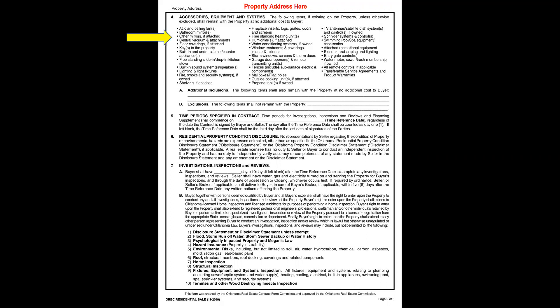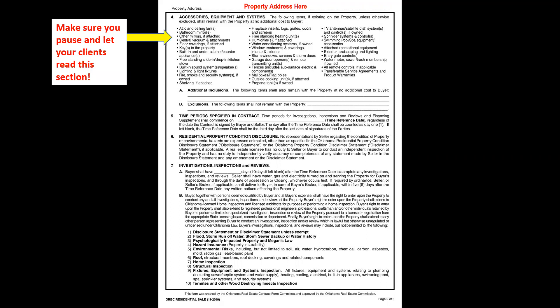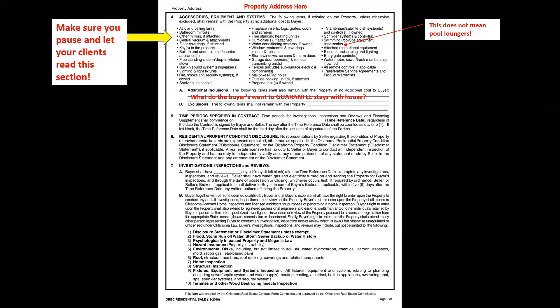Items we frequently run into difficulty with include flat-screen TV brackets, Ring doorbells, surround sound speakers, hot tubs, and children's play equipment. Note that 'swimming pool spa equipment and accessories' means only items needed to clean the pool — not pool loungers or recreational items. If your buyer wants something to stay, write it under additional inclusions. If they want to guarantee the seller takes something with them, write it in section 4B.